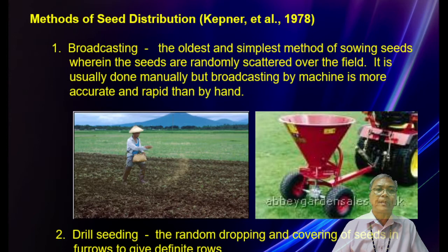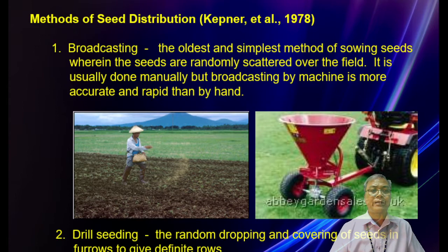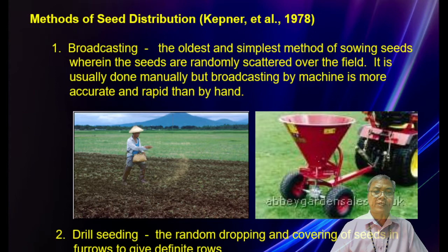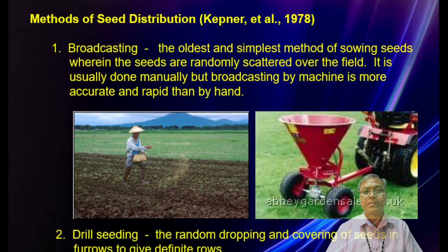There are four methods of seed distribution. The first is broadcasting, the second is drill seeding, the third is precision planting, and the fourth is hill dropping. Broadcasting is the oldest and simplest method of sowing seeds, wherein seeds are randomly scattered over the field — done manually or by machine. Drill seeding involves the random dropping and covering of seeds in furrows to give definite rows. Precision planting is the accurate placing of single seeds at equal intervals in rows. Hill dropping is placing groups of seeds at equal intervals in rows.